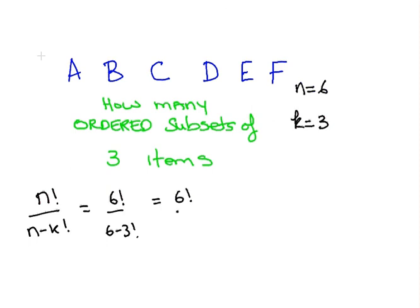And that six factorial can be written as six by five by four by three factorial, all over three factorial. The three factorials cancel out, so we have six by five by four, that is equal to one hundred and twenty. There are one hundred and twenty possible ordered subsets when you pick three items from six.